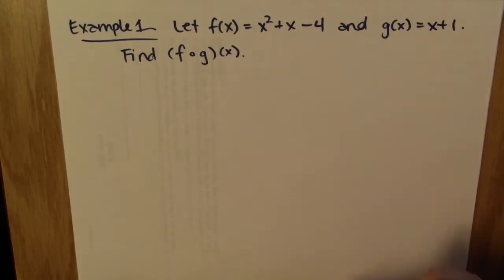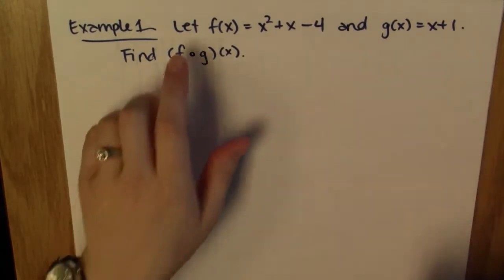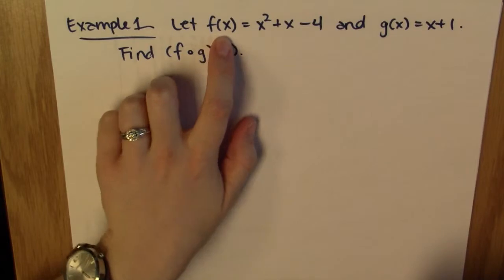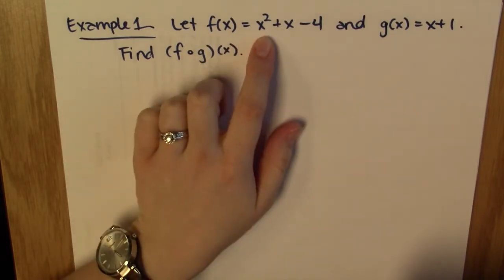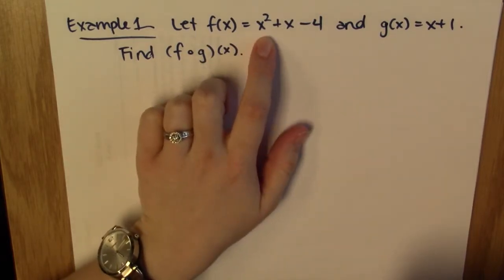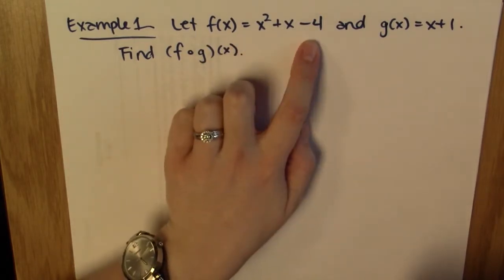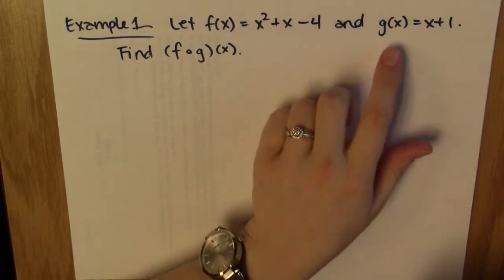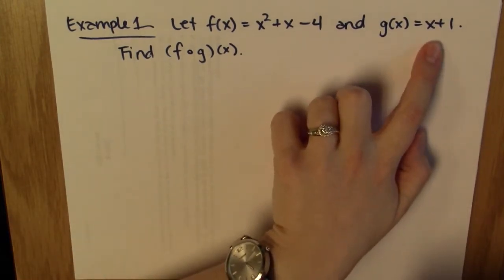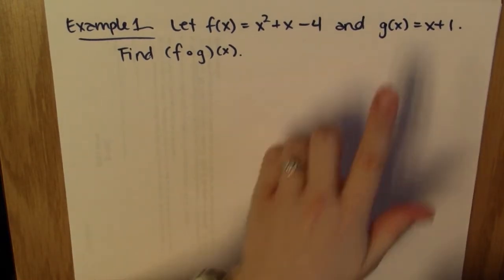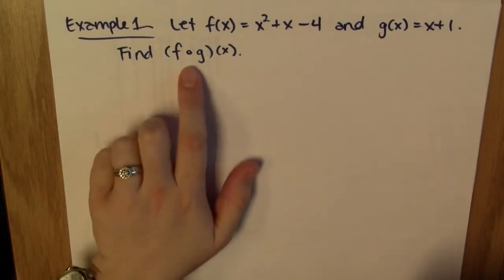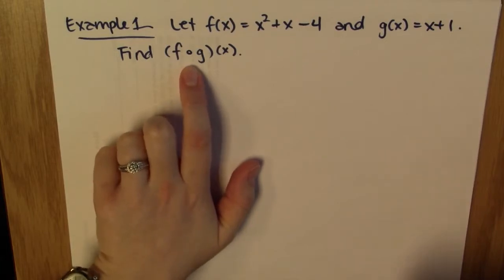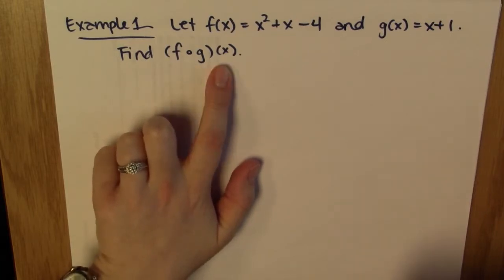Let's start with an example. We're given two functions. The first one, f of x is equal to x squared plus x minus 4. The second one, g of x is equal to x plus 1. What I want to do is find f composed with g of x.